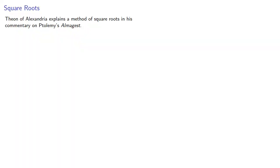Theon of Alexandria explains a method of square roots in his commentary on Ptolemy's Almagest. The method is based on a literal interpretation of √N as the length of one side of a square with area N.